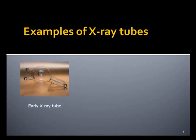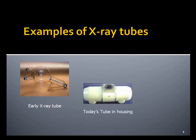Here are some pictures of example tubes. This early X-ray tube had two contacts — an anode and another contact that would deflect the beam. This was a Crooke's tube — C-R-O-O-K-S. The early X-ray tubes used in the medical field were called Crooke's tubes. This is today's X-ray tube in its housing, and that's where the X-rays come out.